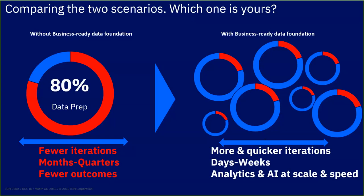Months turn into quarters, there are delays, very few outcomes, and very few successful projects. But with business-ready data at the foundation, you'll see quicker iterations, considerably cut down the time it takes to provide data consumers with data, and you'll have analytics and AI that we like to call 'augmented intelligence at scale and speed.' Today, everyone's talking about an AI strategy, but if we can't eliminate the roadblocks of wrangling data and getting it to a trusted state, we won't achieve AI infusion.